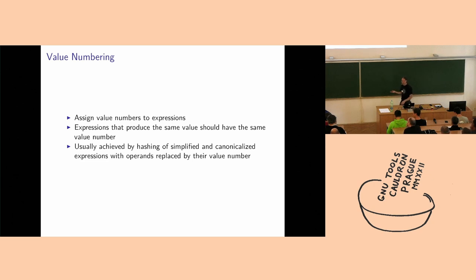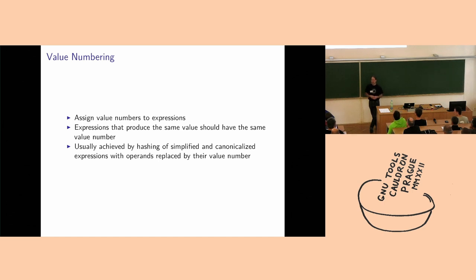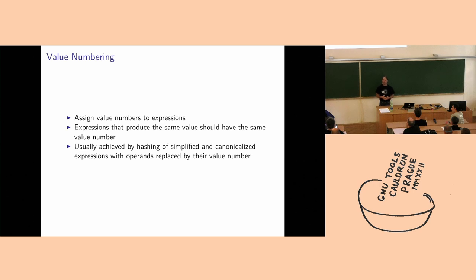Expressions that produce the same value should ideally have the same value number. The process of assigning a value number can be very easy if the expression is syntactically equivalent, or more difficult if it's a variation — like a value multiplied by two versus the value added to itself. Ideally you'd assign the same value number to those, but it's harder if they're not syntactically equivalent. Usually implementations use a form of hashing to equate those expressions.